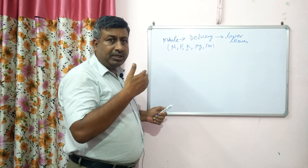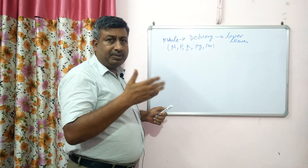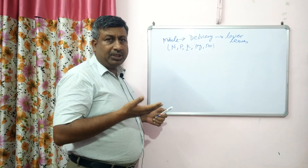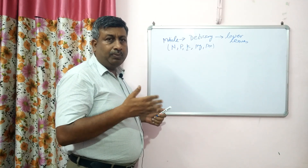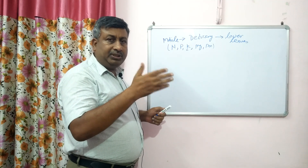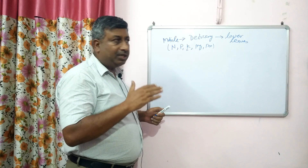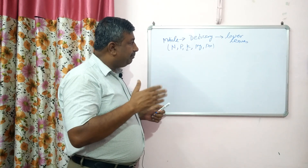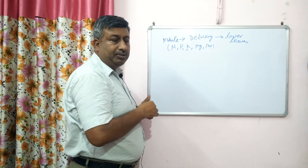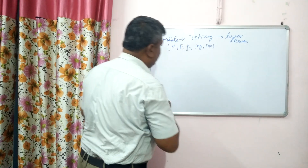Nutrients are translocated from older leaves to younger and newer leaves. When plants grow, potassium moves toward younger leaves. Because potassium is mobile, it moves from older leaves to new leaves — that is the reason deficiency symptoms appear on older leaves. Nitrogen, phosphorus, potassium, magnesium, and molybdenum deficiency all appear on lower leaves because these nutrients are mobile in plants.